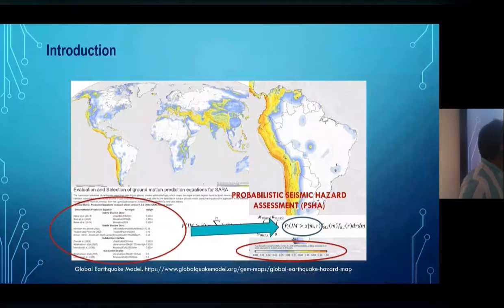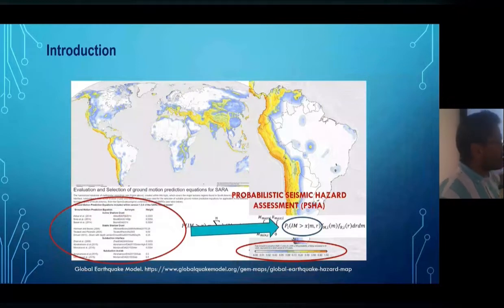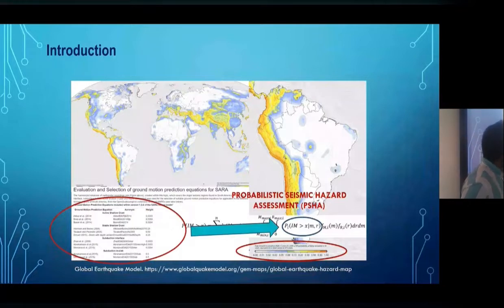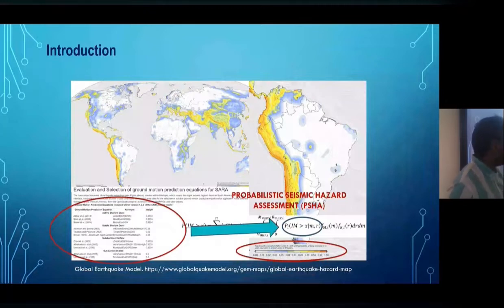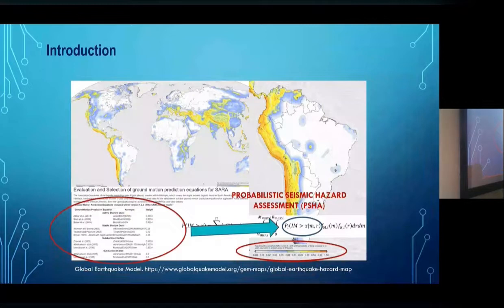Ground motion models are the key empirical components in the estimation of any intensity measure. In South America — I am from Peru and we feel tremors all the time — countries such as Ecuador, Colombia, Peru, Chile, Argentina, and Venezuela share the same subduction zone where the Nazca plate subducts beneath the continental plate. There are many accelerometers that have been installed recently. However, there are issues when we try to use non-local ground motion models to estimate PGA, because some regions don't have sufficient data, so data from multiple regions is combined to develop these ground motion models.